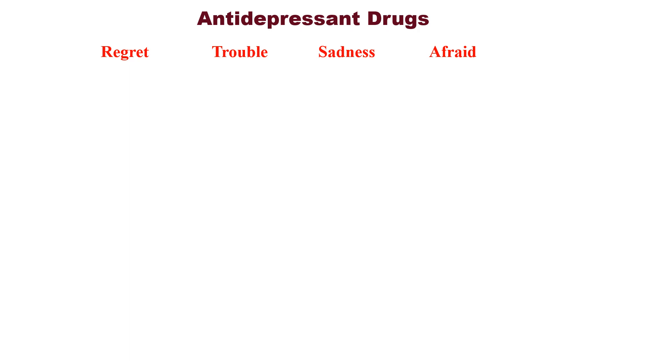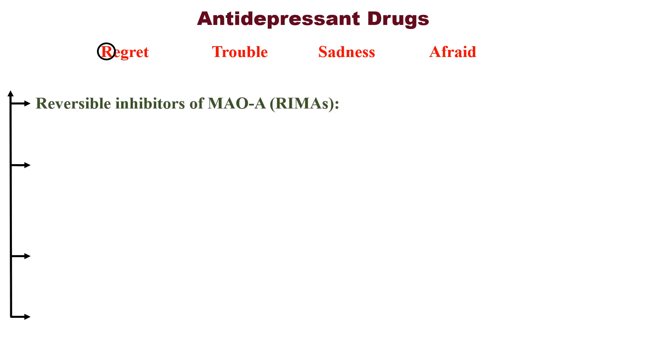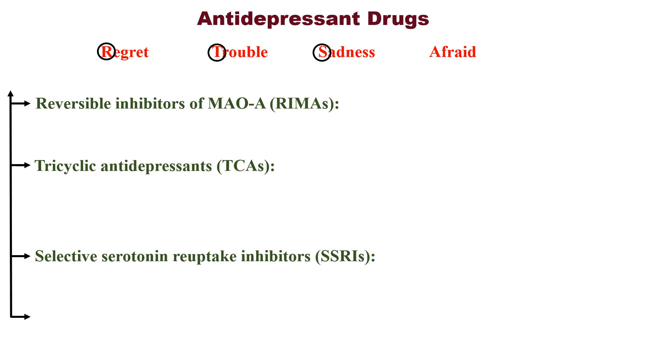Antidepressant drugs. When a person is depressed, he may show a number of symptoms. Among them, remember these four common symptoms: regret, trouble, sadness, and affright. By knowing these four common symptoms, you should be able to remember the complete classification of antidepressant drugs with no confusion. So, R for reversible inhibitors of monoamine oxidase A, T for tricyclic antidepressants, S for selective serotonin reuptake inhibitors, and A for atypical antidepressants.